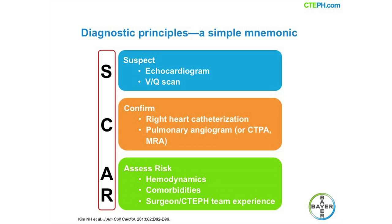When findings on the echo, like right ventricular dilatation or overload, right atrial enlargement, or tricuspid regurgitation, point to pulmonary hypertension, a ventilation perfusion scan, or VQ scan, should be obtained.